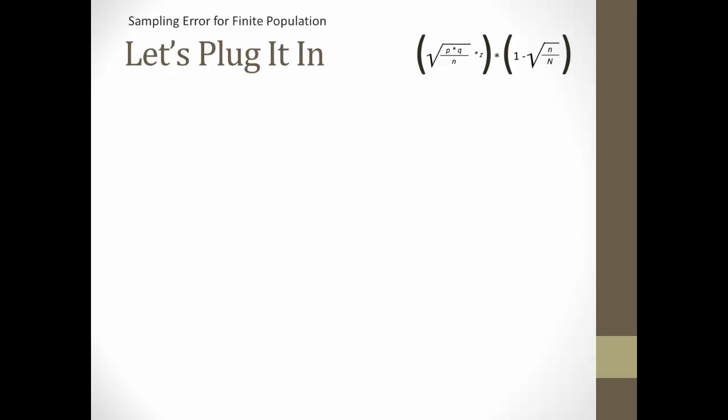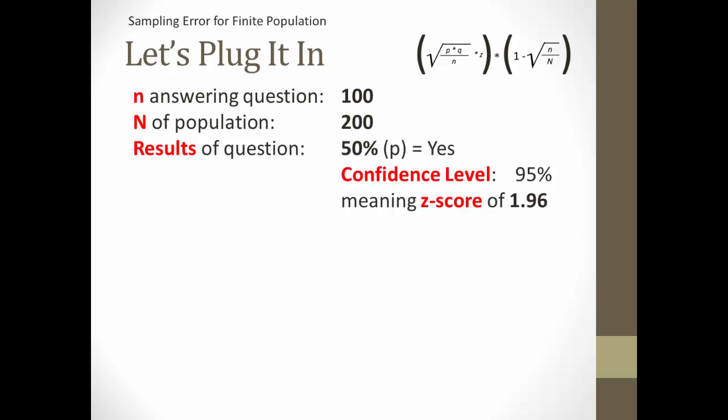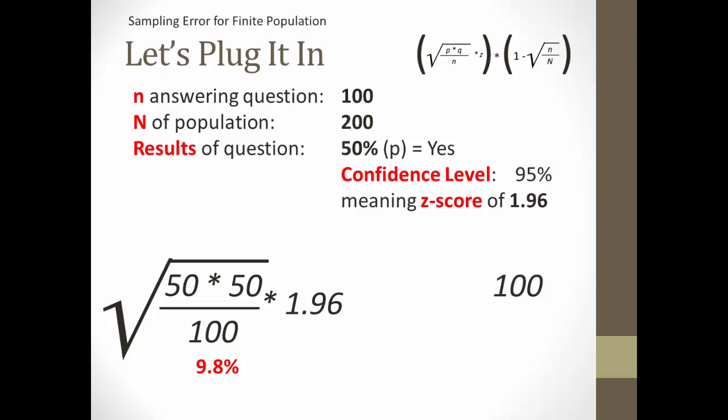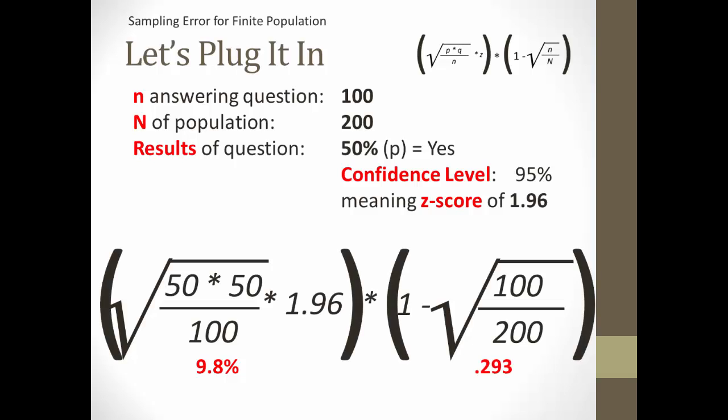Let's plug those numbers into the formula, and if you'd like, you can stop the video now and try to calculate it yourself. So first, we calculate standard sampling error. We have 50% who said yes, so that would be p, leaving 50% who did not say yes, or q. Divide that product by the number answering the question, or 100. Take the square root of that, then multiply the whole thing by the z-score associated with the 95% confidence interval, or 1.96. You end up with a sampling error of plus or minus 9.8%. Then you calculate the finite correction factor. Little n, or the number answering the question, 100, divided by the big N, the number in the population, or 200. Take the square root of that, then subtract that from 1. You should end up with a finite correction factor of 0.293. And then the last step is to multiply the two, ending up with a sampling error of plus or minus 2.9%.